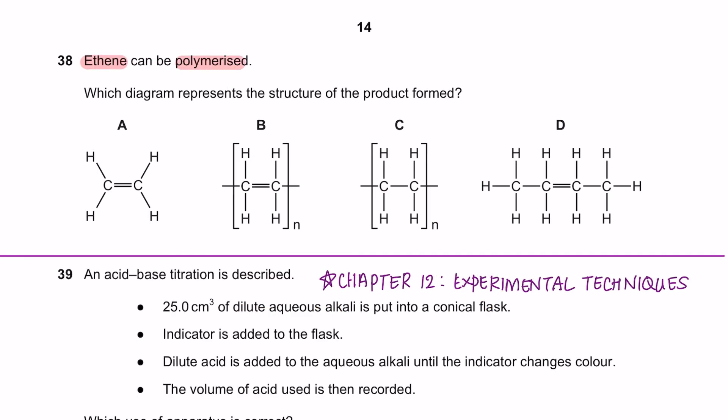Question 38. Ethene can be polymerized. Which diagram represents the structure of the product formed? When an alkene is polymerized, it undergoes the process of addition. So how we can deduce this is, multiple numbers of ethene will be added up together by breaking its bond.